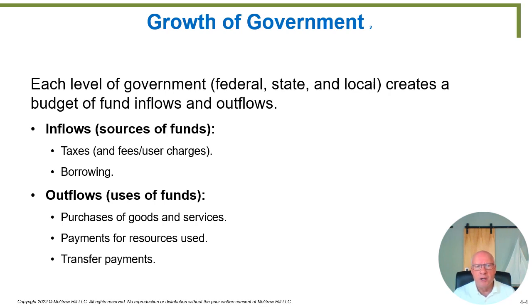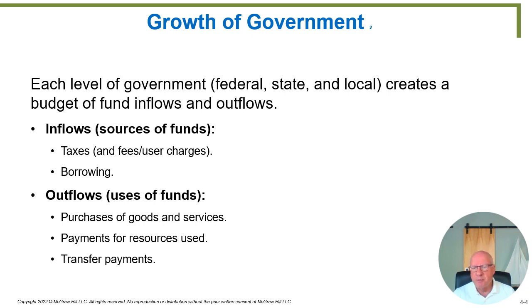Within taxes we're also including user fees — something like the Lexus lanes on the interstate where you pay to use a particular lane using a Peach Pass. Most of us are familiar with regular taxes: sales taxes, property taxes, and income taxes. Outflows are what the government uses funds for: purchasing goods and services, making payments for resources used, and transfer payments such as Social Security, where the government doesn't buy food for elderly people but instead sends a Social Security check for them to buy their own food.